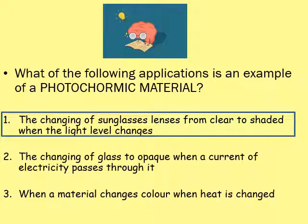The answer is number one — the changing of sunglass lenses from clear to shaded when the light levels change. You could have got that answer quite quickly by looking at the word photochromic and noting the 'photo' part, because photo is always relevant to light.